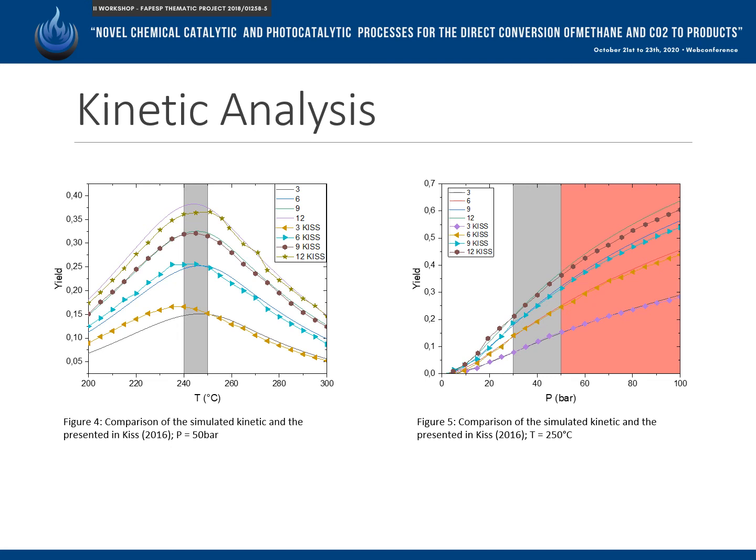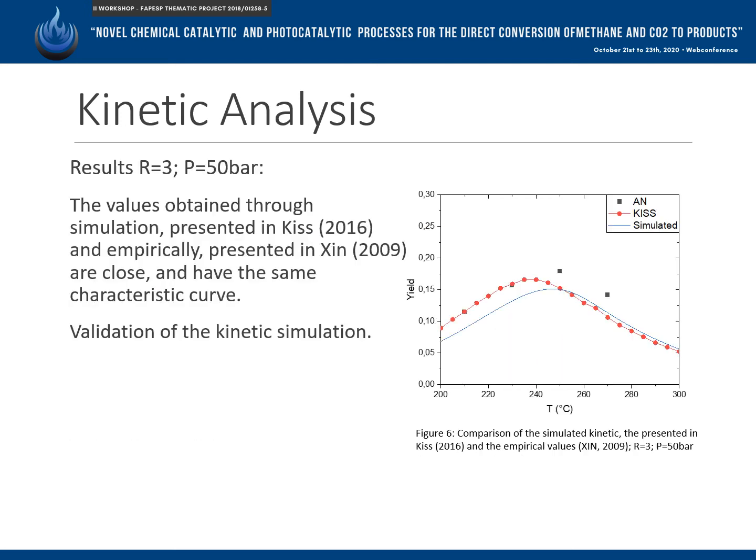An increase in the proportion of the feed results in an increase in the yield of the alcohol. However, due to the reduction of the carbon dioxide feed, this does not mean an increase of the methanol flow. Linking the results, the ideal operating conditions for the reaction system present high pressures and temperatures between 240 and 250 degrees Celsius. Analysing the results obtained through simulations and empirically, the values obtained are equivalent to each other and have the same characteristic curve, validating the results obtained through the simulation.